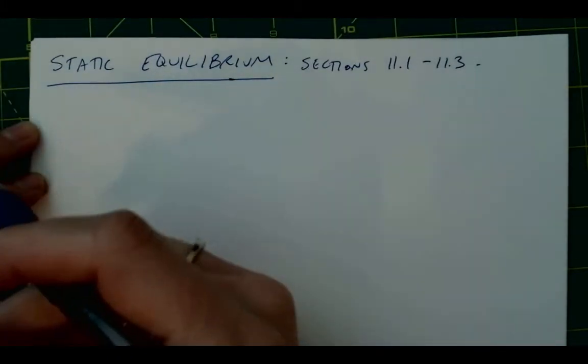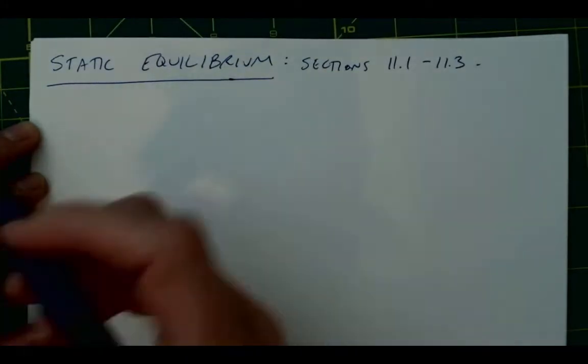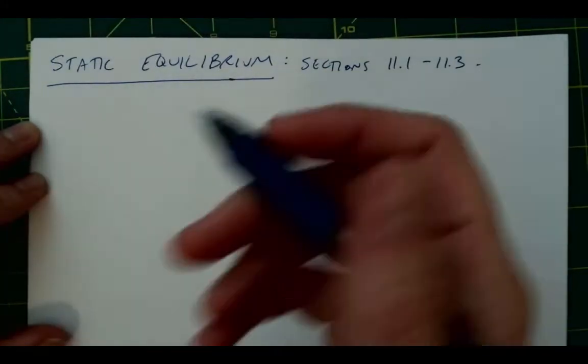then its state of motion was not changing, and therefore, there was no net force acting on it, and we would call that equilibrium, even if it was moving. So remember, something with constant velocity could still be in equilibrium.